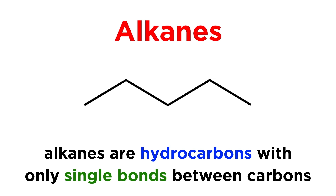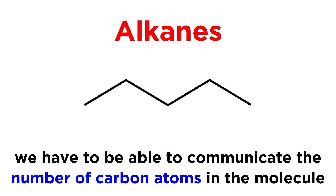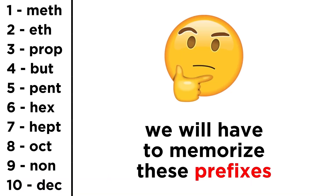Alkanes are a type of hydrocarbon, and they specifically have only single bonds between the carbon atoms, so there are no double or triple bonds between the carbons of an alkane. These can be depicted very easily with the line notation we already learned, and with no other elements aside from carbon and hydrogen, they will just look like some zigzags, whether straight-chain or branched. The first rule we must learn is that we have to be able to communicate how many carbons are in the molecule. This will require the memorization of a few prefixes.